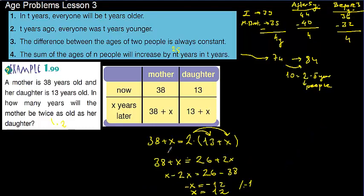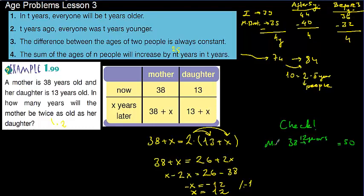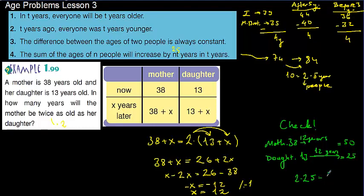So after 12 years, the mother's age will be twice the daughter's age. Let's check: mother's age is 38, and after 12 years the mother's age is going to be 50. The daughter's age is 13 now, and after 12 years she is going to be 25, and 2 times 25 makes 50. We found it correctly.